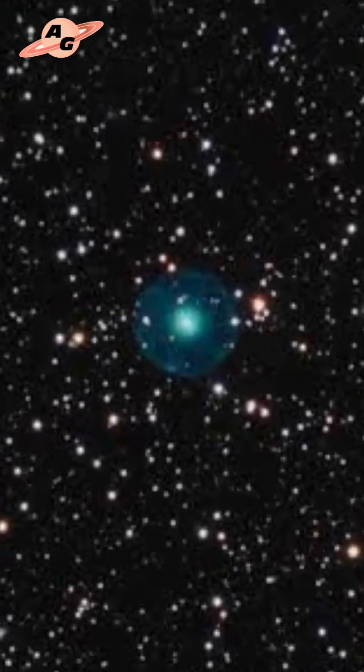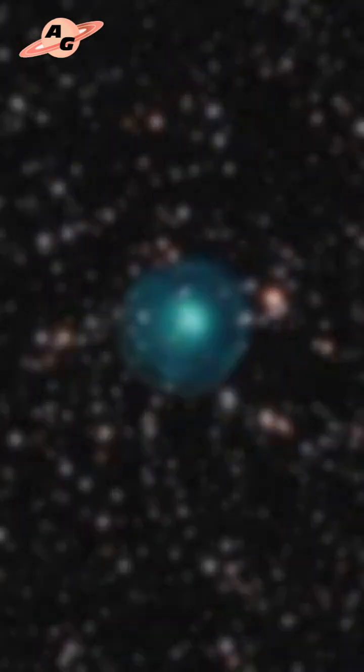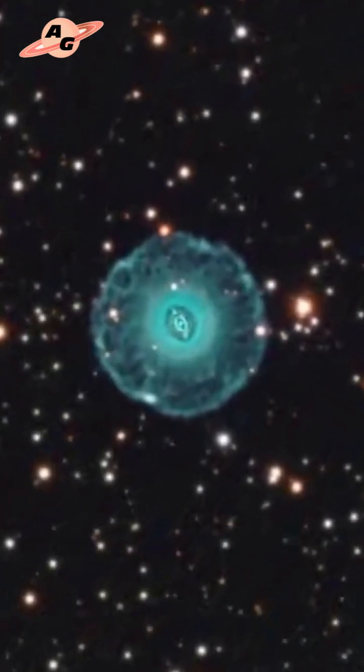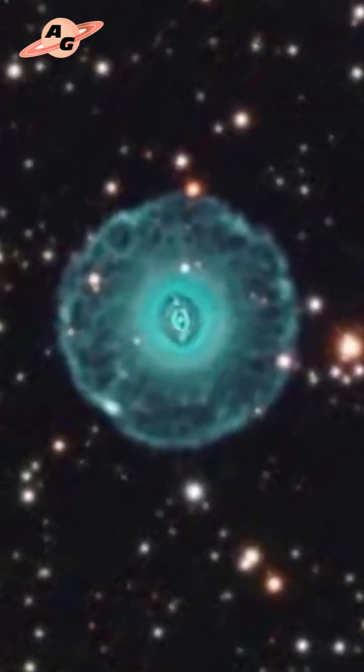Blinking Planetary is located in the constellation Cygnus, and is located at a distance of 1,600 to 5,500 light years from Earth.